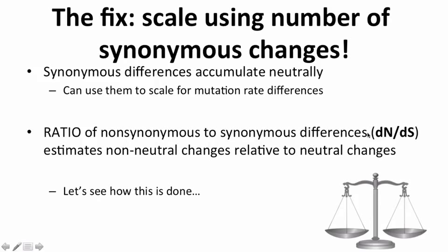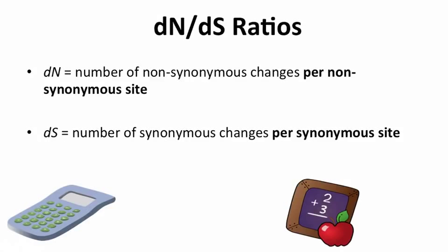Specifically, we'll focus on the measure referred to as dN over dS. These are not just raw counts — dN is the number of non-synonymous changes per non-synonymous site, and dS is the number of synonymous changes per synonymous site. You may remember that the second position of every codon is always non-synonymous, so there's no opportunity for any change there to be synonymous. We have to use this extra scaling even within our measures of what's happening non-synonymously and synonymously.